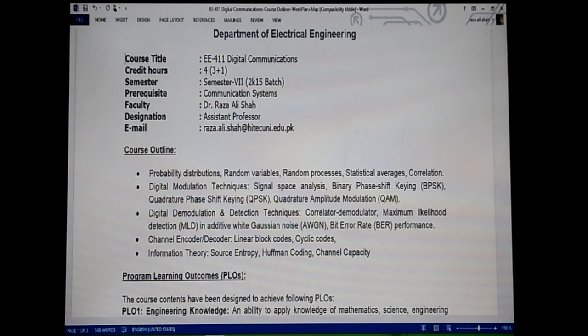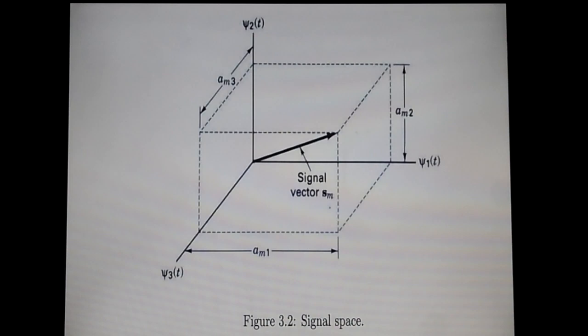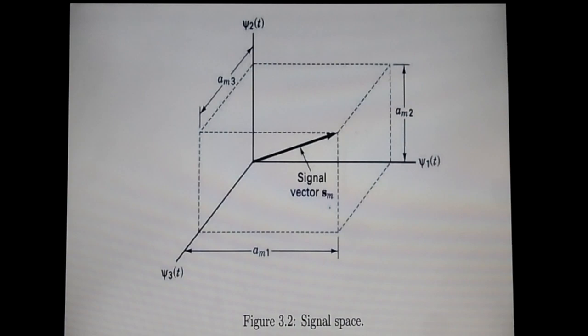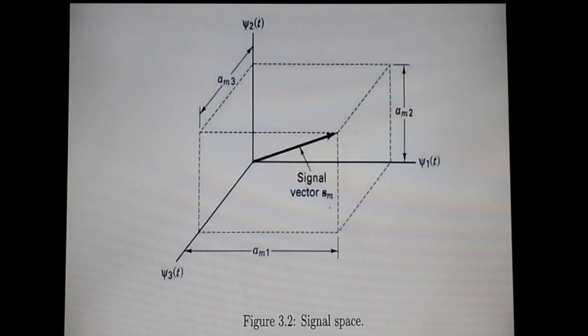Today I will explain the concept of signal space. Let me move to the final slide — this is actually our target. In this figure, a signal space is shown with three axes and a vector drawn in three-dimensional space. The vector represents a signal; it is a signal vector, bold s sub m. The three axes are ψ₁(t) on the horizontal, ψ₂(t) on the vertical, and ψ₃(t) as the third axis.